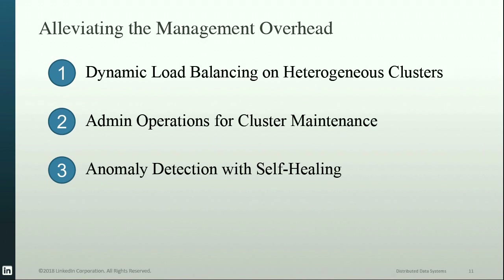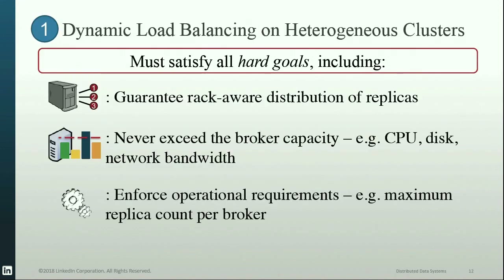To satisfy these management needs, Cruise Control aims to provide dynamic load balancing on heterogeneous clusters, support admin operations for cluster maintenance, and enable anomaly detection with self-healing. The first target regarding dynamic load balancing involves a number of hard goals — requirements that Cruise Control must satisfy. For example, Rack Awareness ensures that no partition has more than one replica on a single rack, so if a rack fails, the availability of partitions will not be significantly affected.